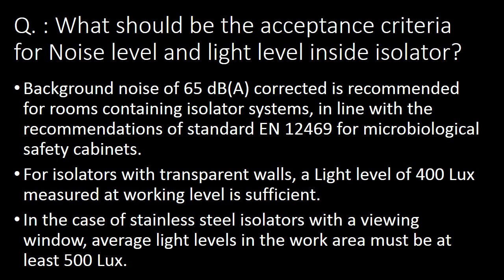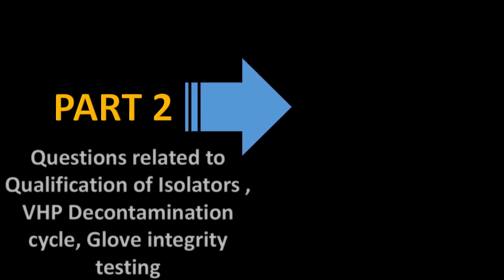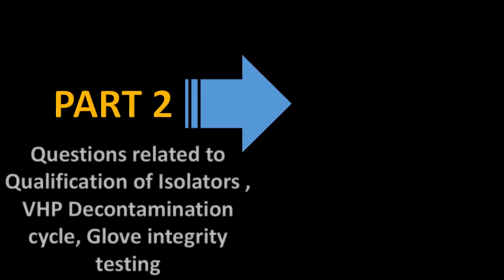For isolators with transparent walls, a light level of 400 lux measured at working level is sufficient. For stainless steel isolators with a viewing window, the average light level in the work area must be at least 500 lux.